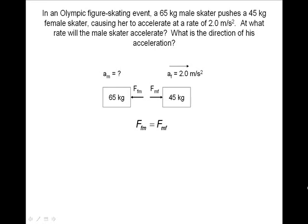Newton's third law tells us that for every action force, there is an equal in magnitude and opposite in direction reaction force. So if the male pushes the female skater, the force she pushes him back with is equal in magnitude and opposite in direction. This makes FMF equal to FFM.